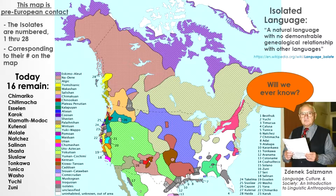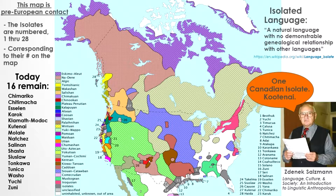Today, the current 2016 number, derived from Ethnologue: Languages of the World, lists 86 surviving isolates around the globe. In North America, it lists 16, with the Kootenai language being considered as the last remaining Canadian isolate.